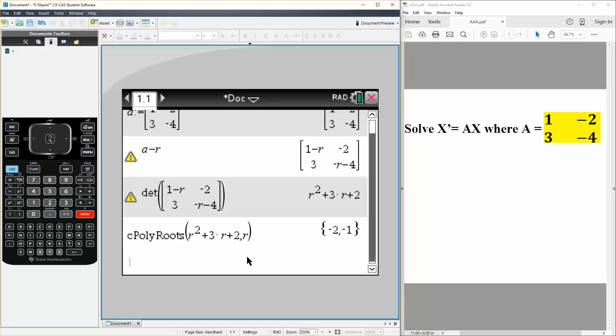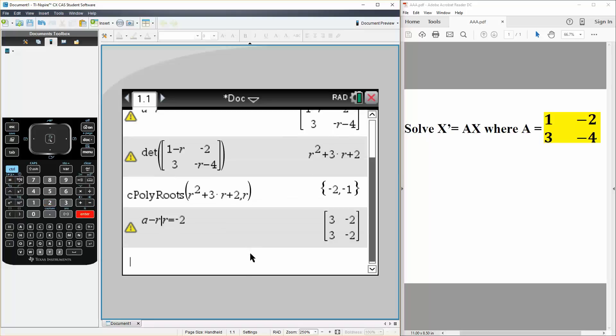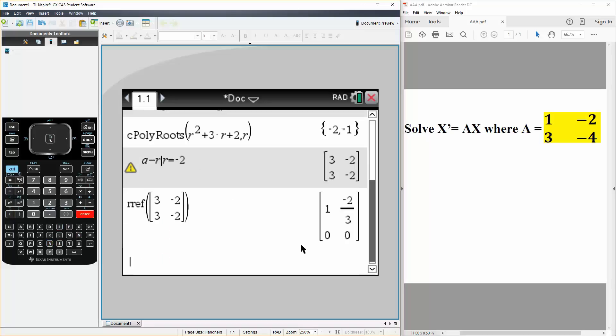And so next we want to get the eigenvector. So we can go back to this, A minus R, and we will set, so control equal, line straight down, we set R is equal to minus 2, this one right here, one eigenvalue, hit enter, and this is what we get. And next we will get the row reduced echelon form of this, so RREF, parenthesis, answer, hit enter.